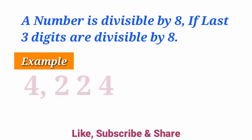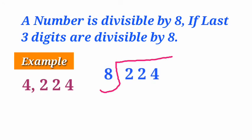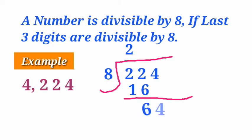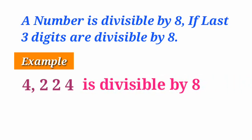Let us see another example: 4224. The last 3 digits are 224. Dividing 224 by 8: 8 times 2 is 16; 22 minus 16 is 6; bring down 4 to get 64; 8 times 8 is 64; remainder is 0. The last 3 digits are divisible by 8, so the given number 4224 is divisible by 8.